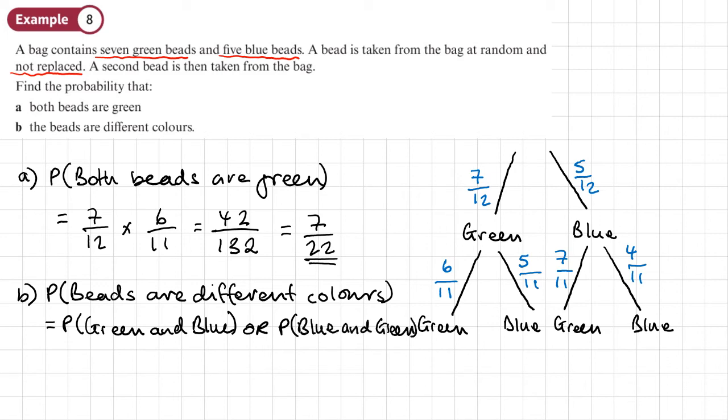Now one way to do these questions is basically to replace each of the word by their probabilities. Replace the word and with times and replace the word or with plus. That's one way of doing it.